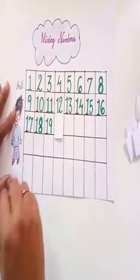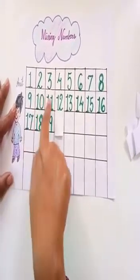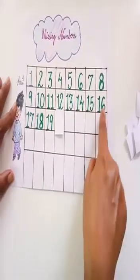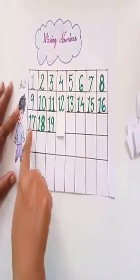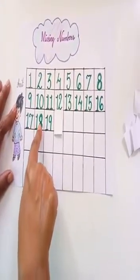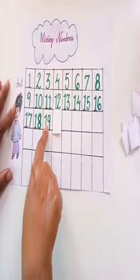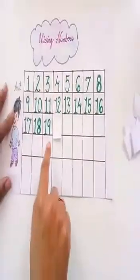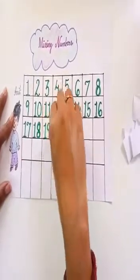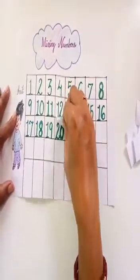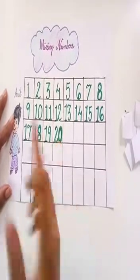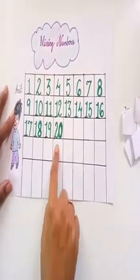So let's count: 10, 11, 12, 13, 14, 15, 16, 17, 18 and 19. Again one number is missing — let's see. Yes, 20! Which number? 20. Very good.